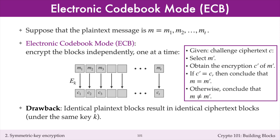The main problem with ECB mode is that the encryption process is deterministic. And so, for security, one must introduce randomization into the encryption process.